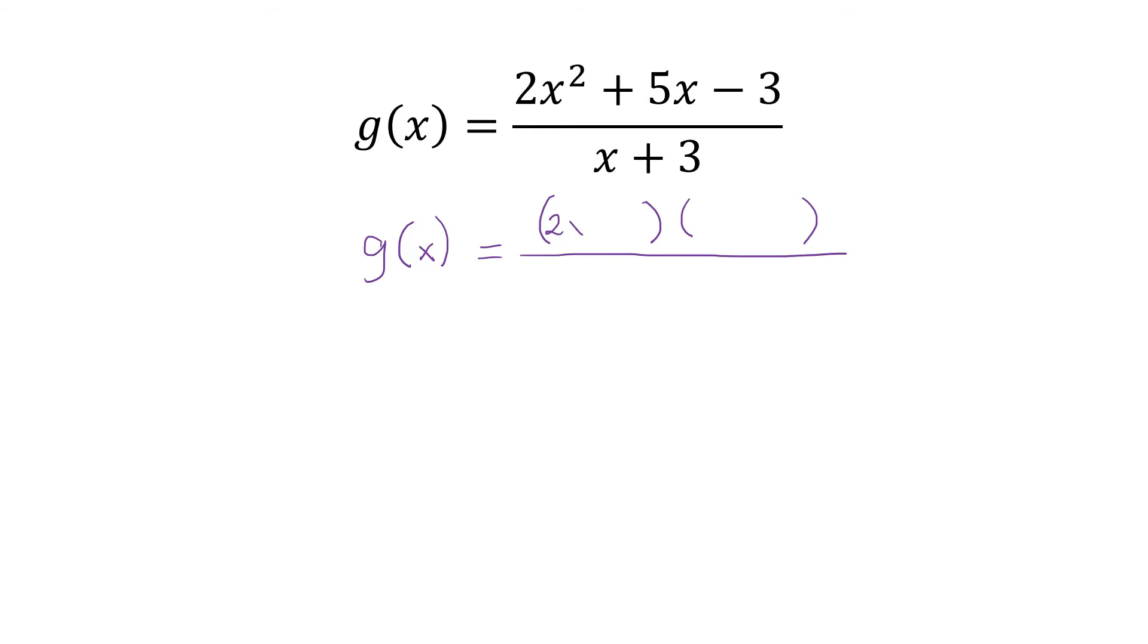Factors of 2x² are 2x and x. Well, factors of 3 can be 1 by 3 or 3 by 1. Okay, you'll do that by trial and error. Okay, so 1 times 3.